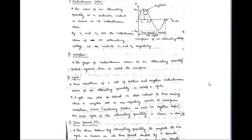The definition of cycle: each repetition of a set of positive and negative instantaneous values of an alternating quantity is called a cycle. A cycle can also be defined as the interval of time during which a complete set of non-repeating waveform variations occurs. For example, if a waveform repeats continuously with the same positive and negative values, that constitutes a cycle.